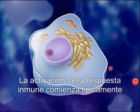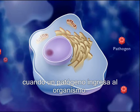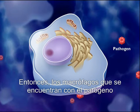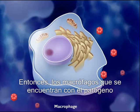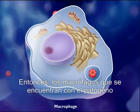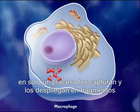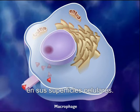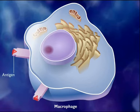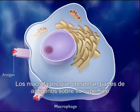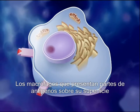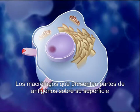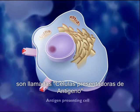Activation of the immune response typically begins when a pathogen enters the body. Macrophages that encounter the pathogen ingest, process, and display the antigen fragments on their cell surfaces. Macrophages with antigen fragments displayed on their surfaces are called antigen-presenting cells.